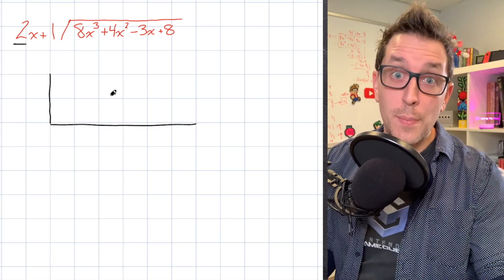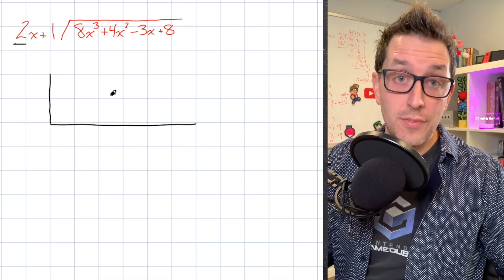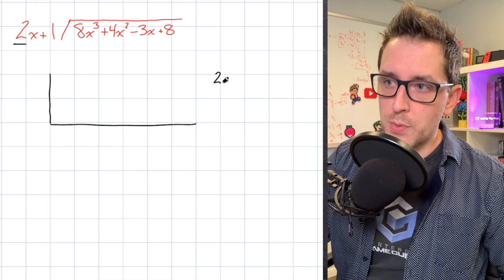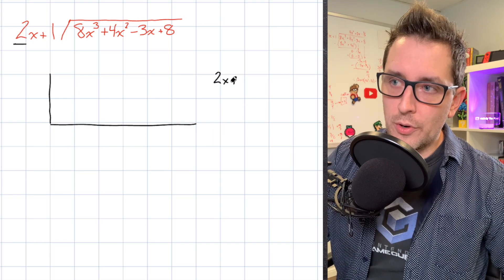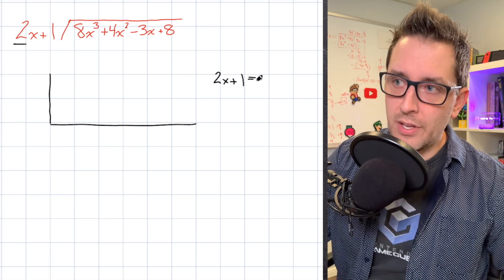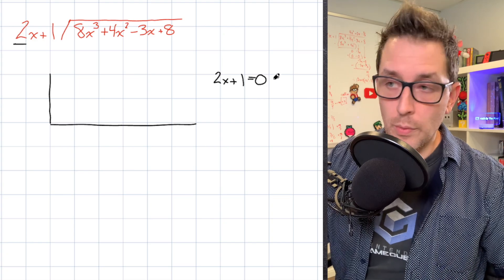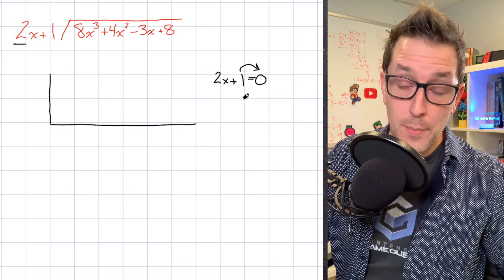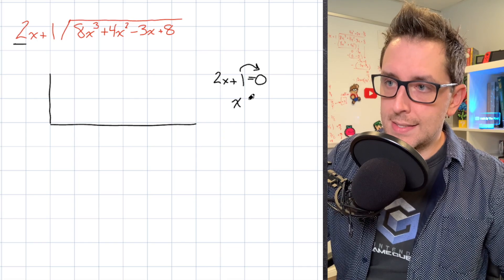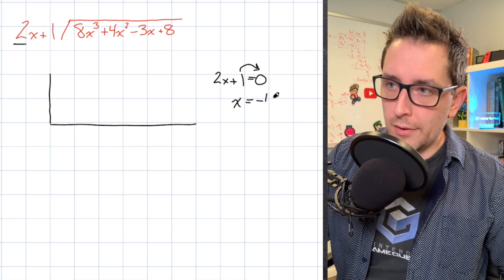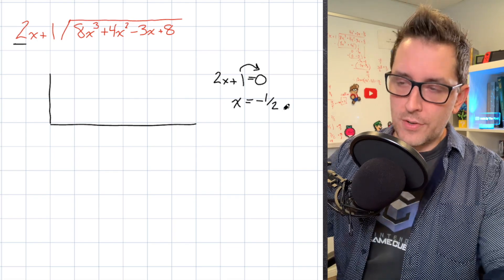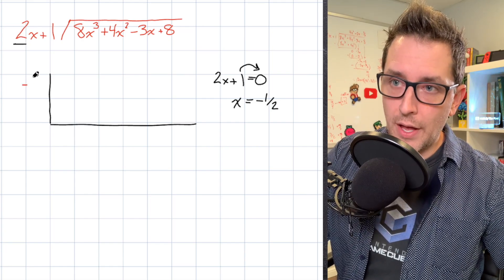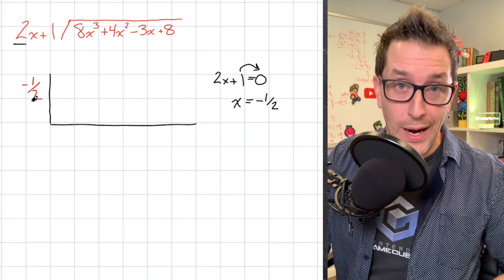Let's start the same way by finding the first piece of information that we need for our table. We take our divisor of 2x plus 1 and set it equal to 0, finding the value of x that makes the divisor equal to 0. Applying simple algebra — bring the 1 over to the other side, divide both sides by 2 — to get x equals negative 1 half. That is the first key piece of information, placed on the outside of the bracket.